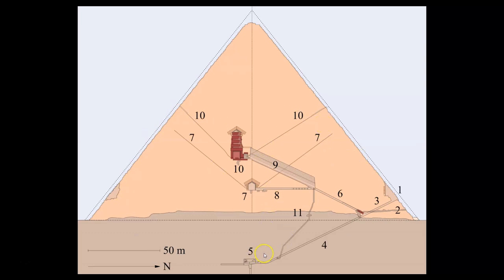Second, this German engineering team proposes that the function of this structure involves one-way valves, and I certainly agree. They suggest one-way valves in the subterranean chamber; other researchers have suggested one-way valves in the northern pump shaft and the upper well system — I agree with that too. Those one-way valves are another indication this is actually a chemical manufacturing sequence. If this was a pharaonic burial, why would this system include one-way valves? It certainly wouldn't need them for a pharaonic burial.